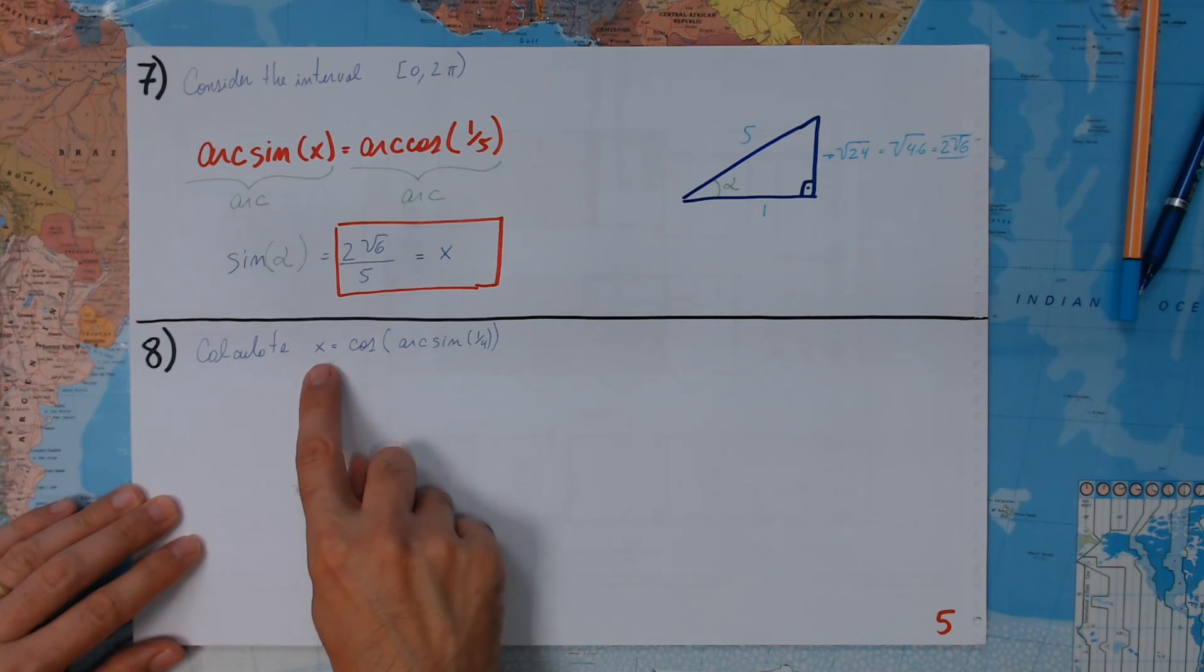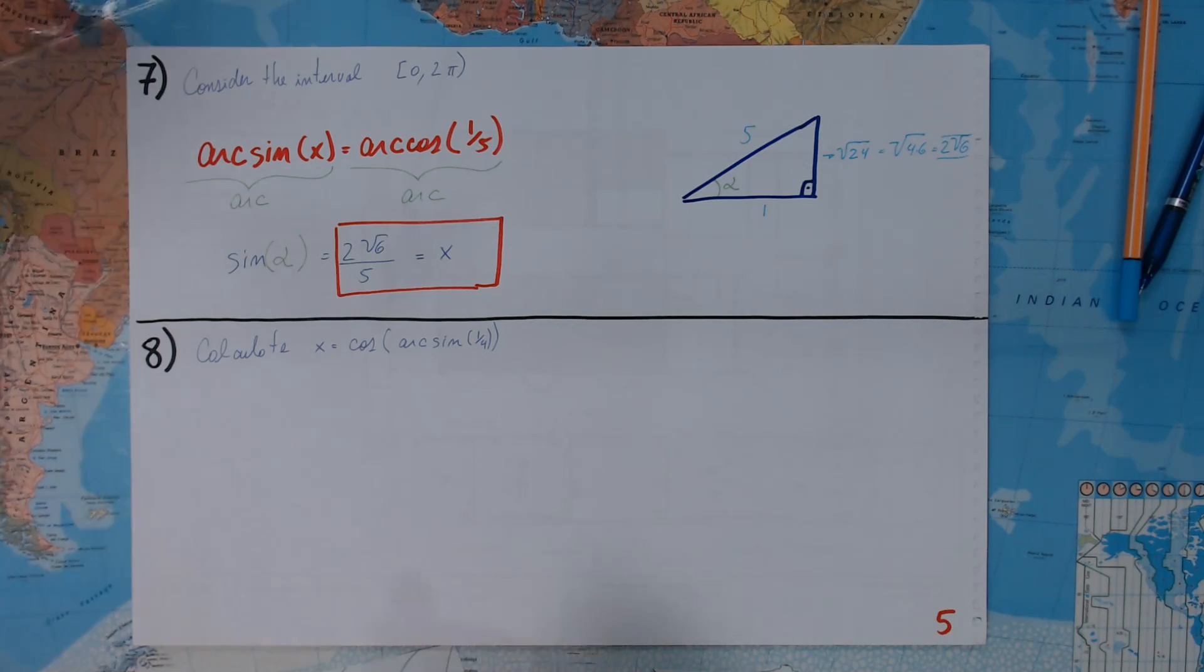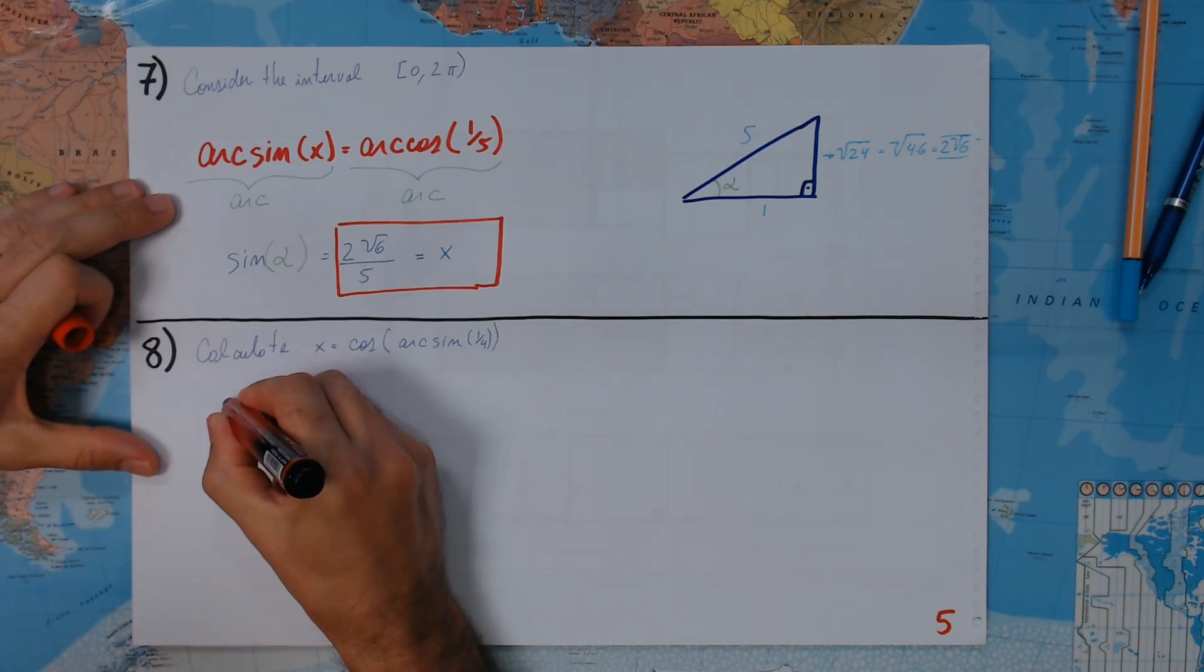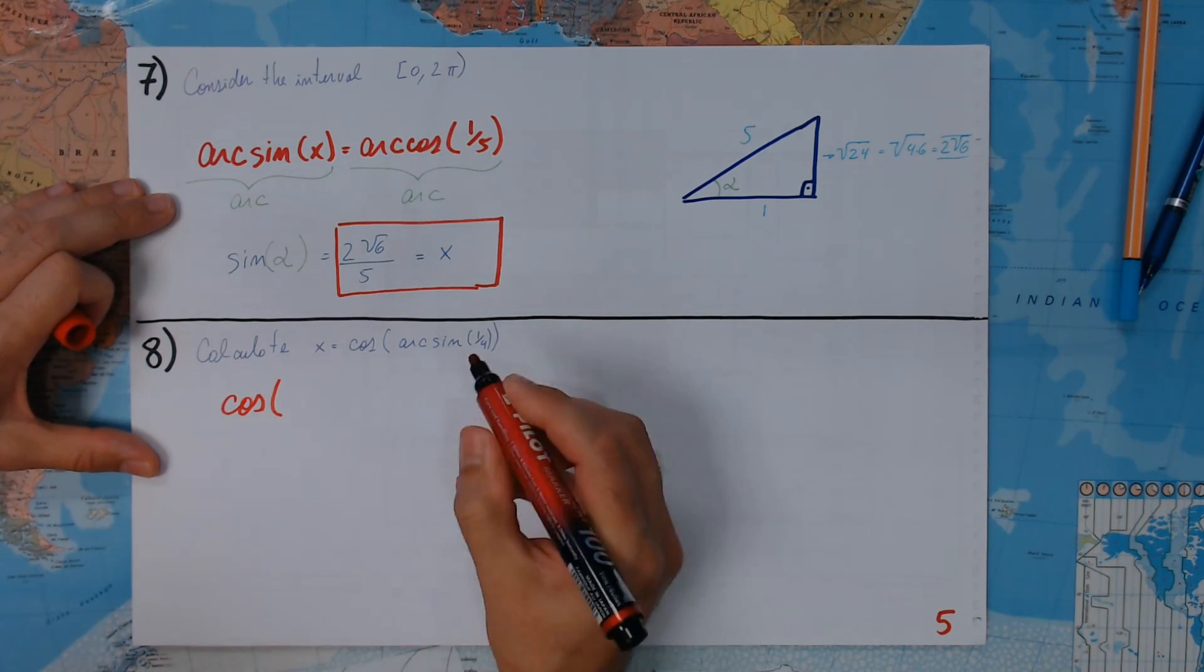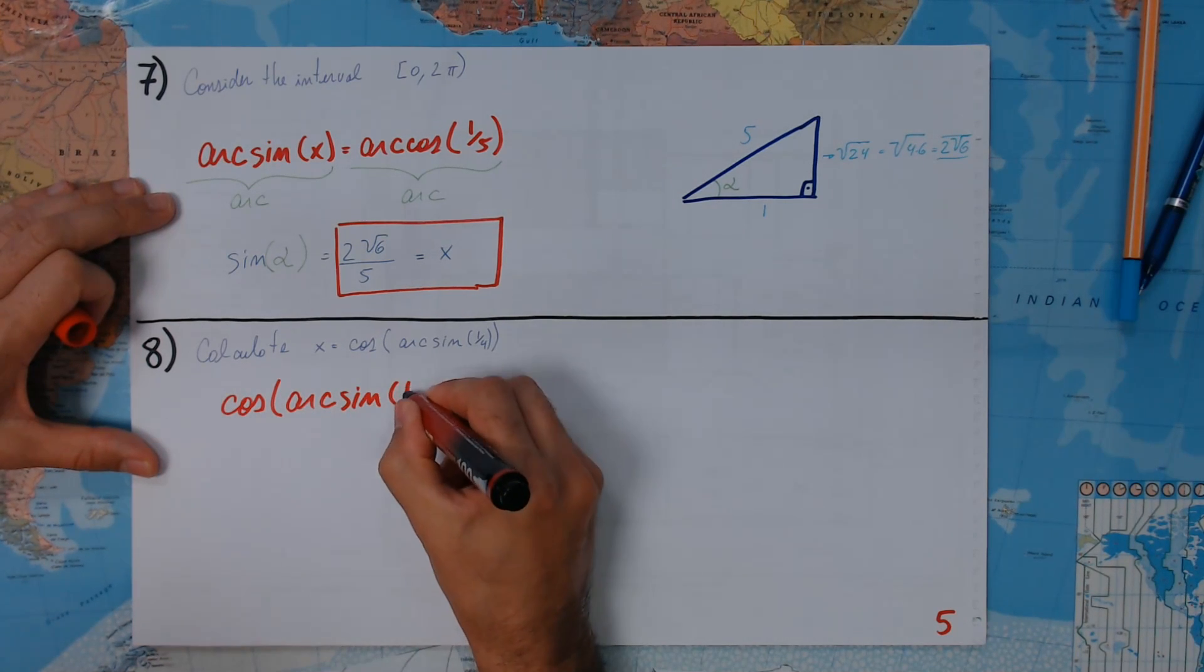Okay, this one. Calculate x for x = cos(arcsin(1/4)). Let me put a big one. This is what we have to do. The cosine of the arc sine of 1/4.